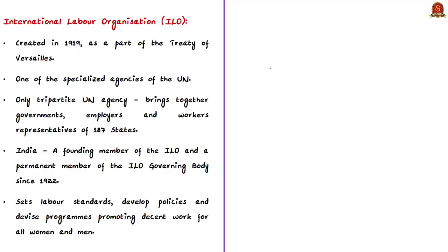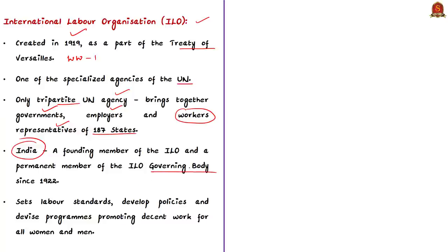The ILO was created in 1919 as part of the Treaty of Versailles that ended World War I. It is one of the specialized agencies of the United Nations and the only tripartite UN agency which brings together governments, employers, and workers' representatives of 187 states. India is a founding member of the ILO and has been a permanent member of the ILO governing body since 1922. The ILO plays an important role in ensuring cooperation to obtain similarity of working conditions in countries competing for cheaper markets.